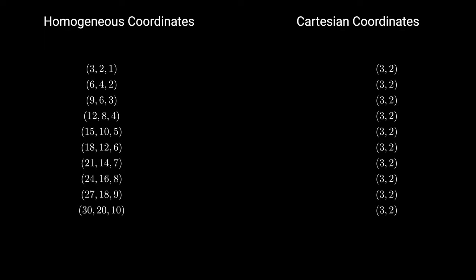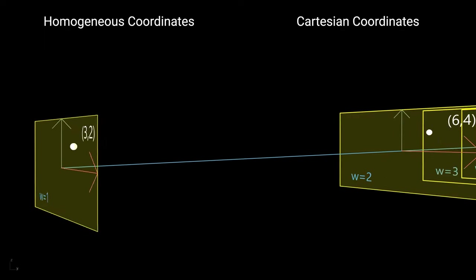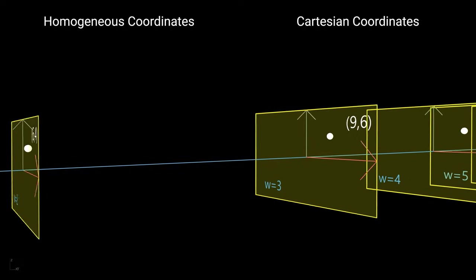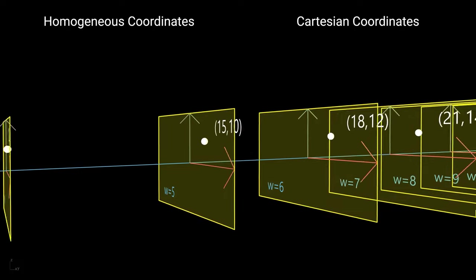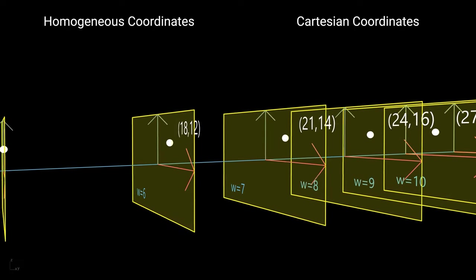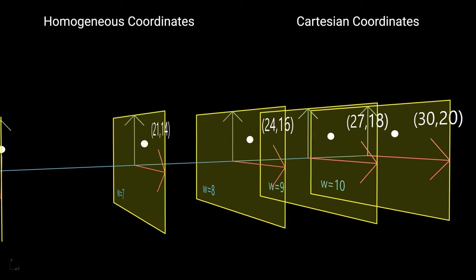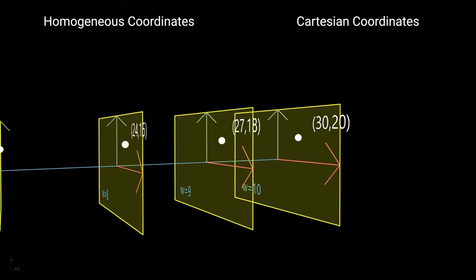Since they represent the same point in Cartesian coordinates. You can imagine the W is the distance to your screen. Even though the surface becomes bigger and bigger, the point on the surface seems relatively not changed. That's the essence of homogeneous.